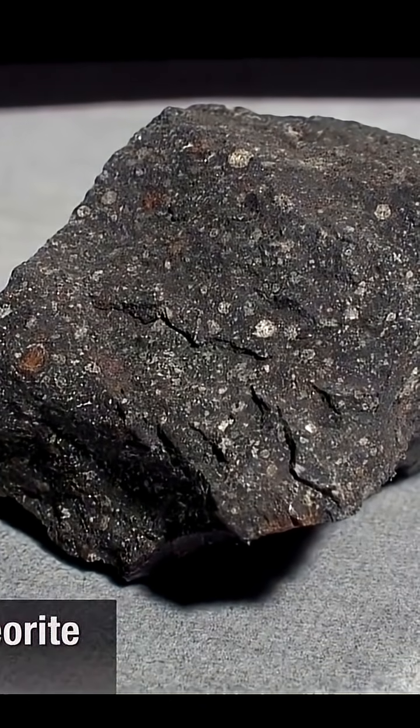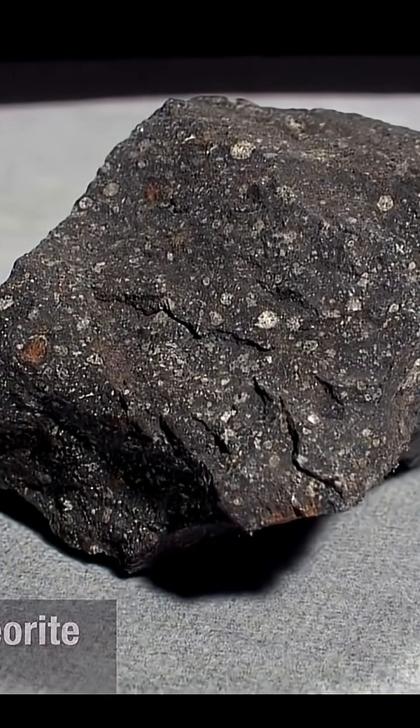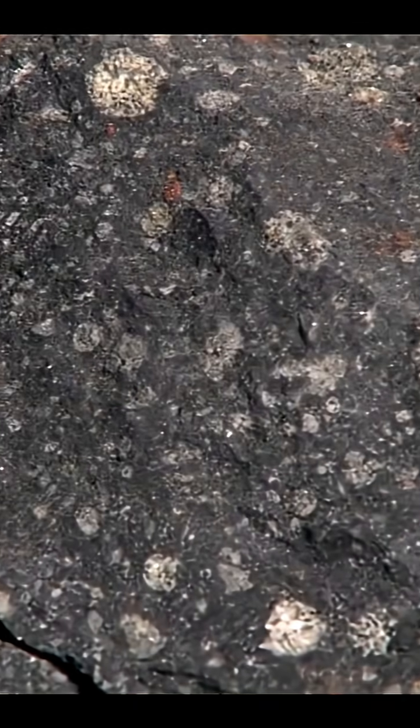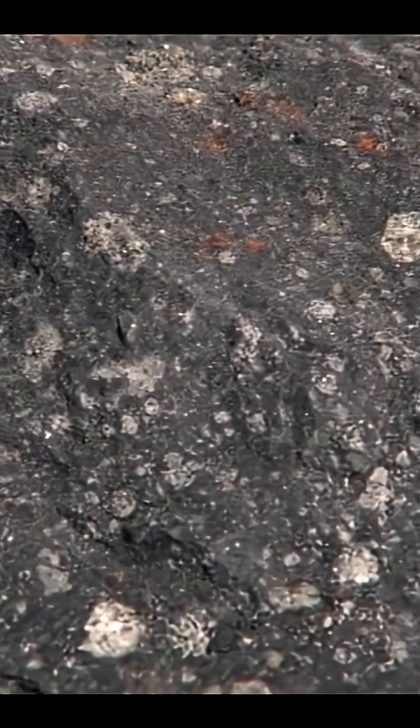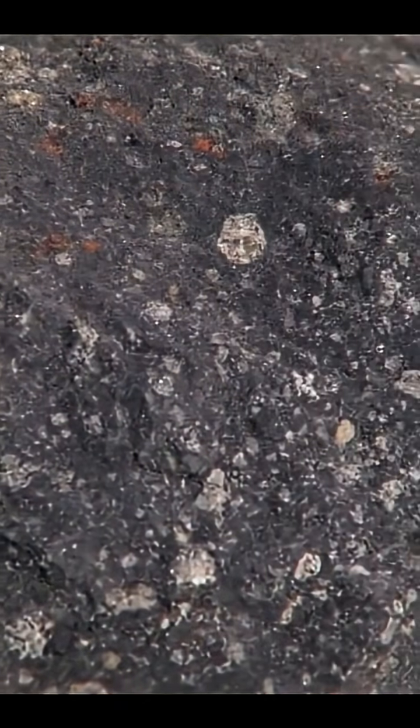When the Murchison meteorite smashed into the interior of Australia in 1969, evidence was found that life-forming left-handed amino acids may have originated in deep space. The drive was really the recognition that meteorites might provide us the opportunity to throw some light on a really fundamental question.